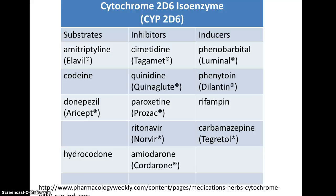Inducers, on the other hand, interact with the gene that codes for the enzyme molecule and promote increased synthesis of enzyme molecules through interaction at the DNA level. Although there are a number of substances that can inhibit the CYP2D6 enzyme, there are very, very few substances that act as inducers, so we say that CYP2D6 is non-inducible. Changes in metabolism from increased enzyme production are not the result of interaction of other substances with the DNA.